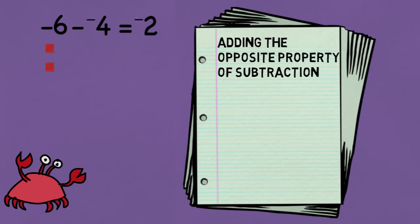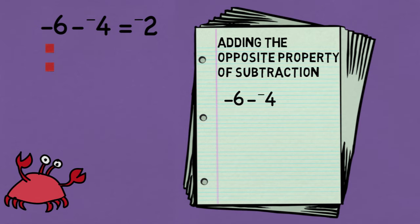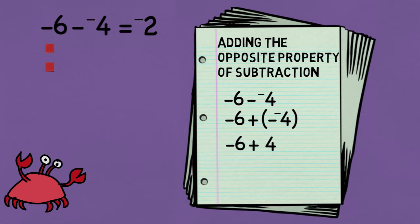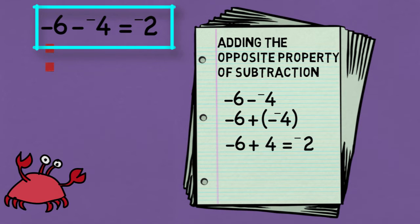So let's go back to negative 6 minus negative 4. I could think of that as negative 6 plus the opposite of negative 4, which would be positive 4. And using the rules for addition, I know that negative 6 plus 4 is equal to negative 2. In both cases, the answer was negative 2, and we can see that negative 6 minus negative 4 is equivalent to negative 6 plus 4.